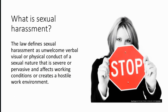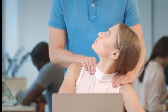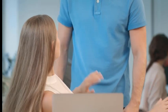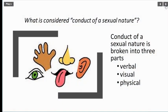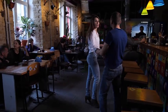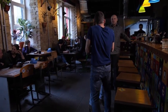What is sexual harassment? The law defines sexual harassment as unwelcome verbal, visual, or physical conduct of a sexual nature that is severe or pervasive and affects working conditions or creates a hostile work environment. Conduct of a sexual nature is broken into three parts: verbal, visual, and physical.